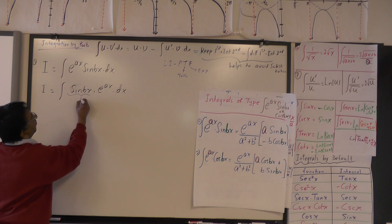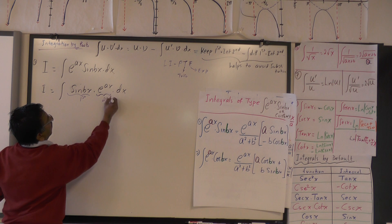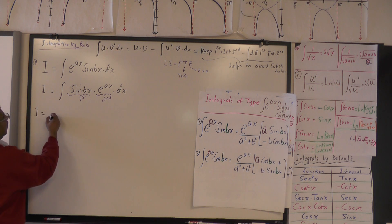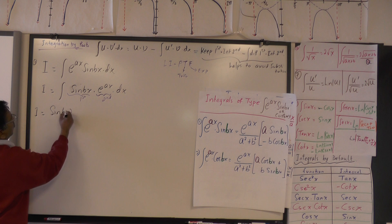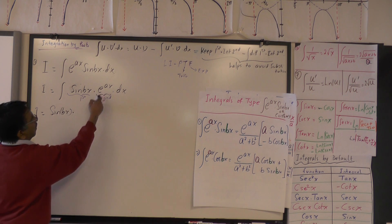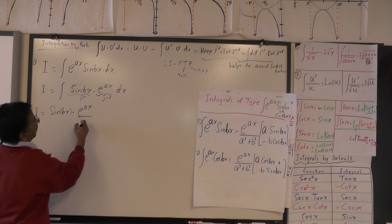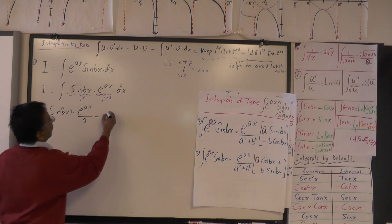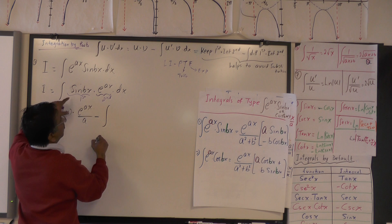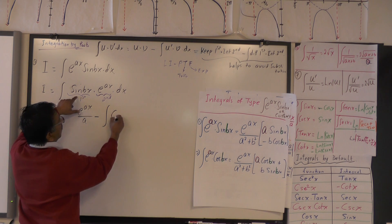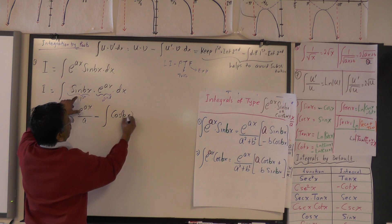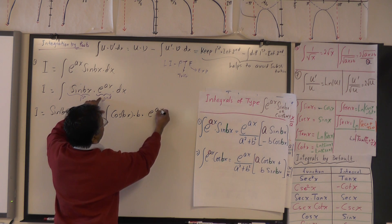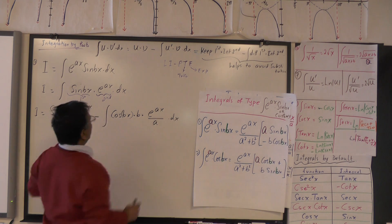I'll call sine bx the first and e raised to ax the second, so we can apply the formula directly. So: I equals keep the first — sine bx — times integrate the second, integral of e raised to ax, which gives e raised to ax over a, because this is linear form so a goes to the denominator. Minus integral of derivative of sine bx, which is b·cos bx, times e raised to ax over a.